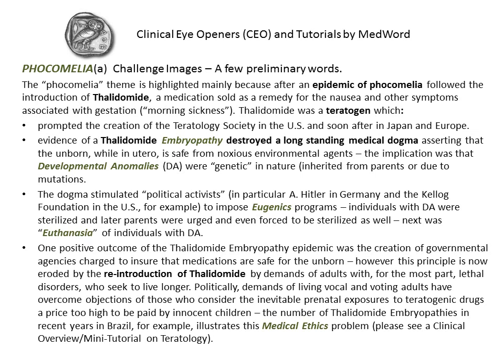This then triggered political and social enthusiasms that were generally called eugenic programs. Hitler was one of the enthusiasts, and so were those who established the Kellogg Foundation in the US. These enthusiasts managed to impose mandatory sterilization of individuals with developmental anomalies, and then went further — managing to create euthanasia programs where such individuals were actually killed, and where parents of such children were compulsorily or forcefully sterilized.